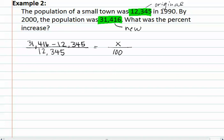We now start by finding the difference. The difference here is 19,071. This is still over 12,345 equals x over 100. Remember, we can clear a denominator by multiplying both sides by the product of the denominators.